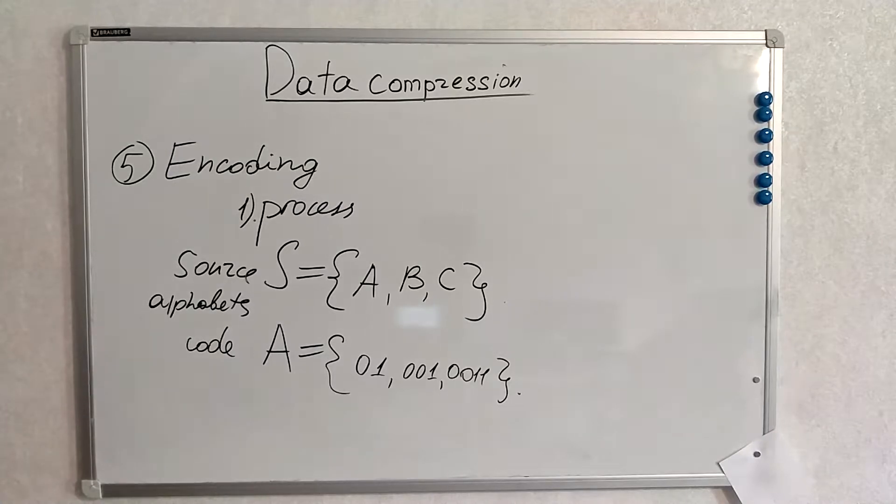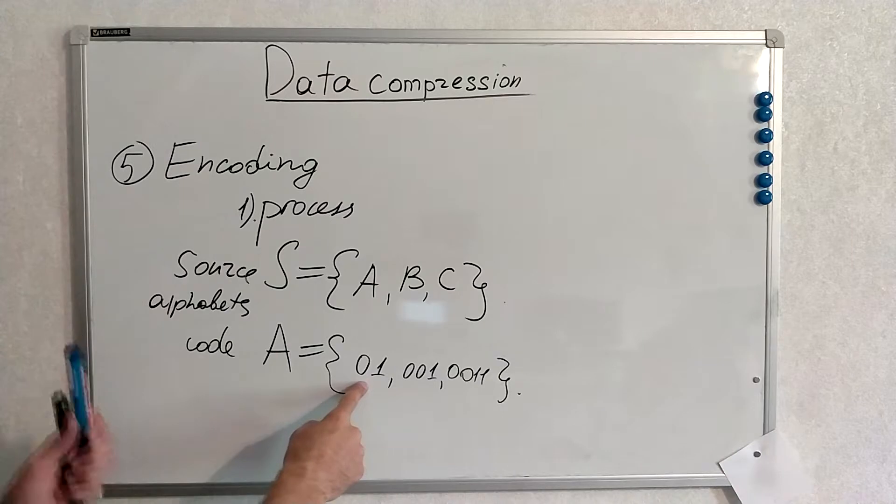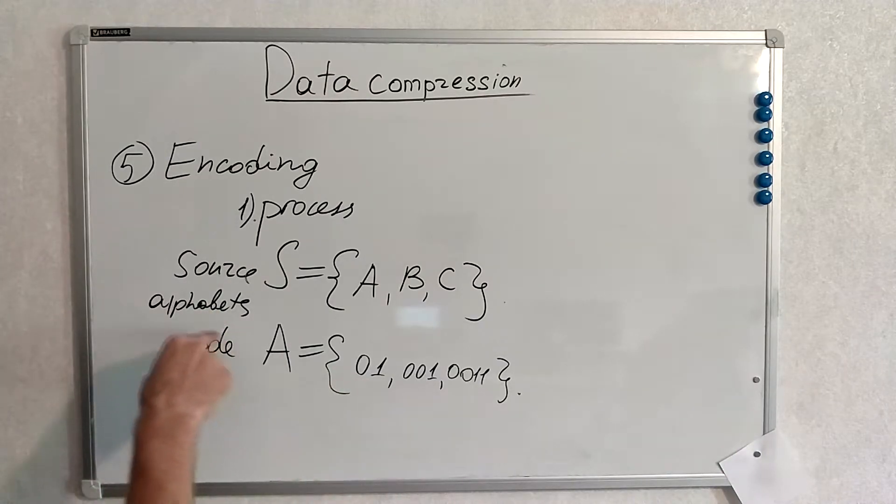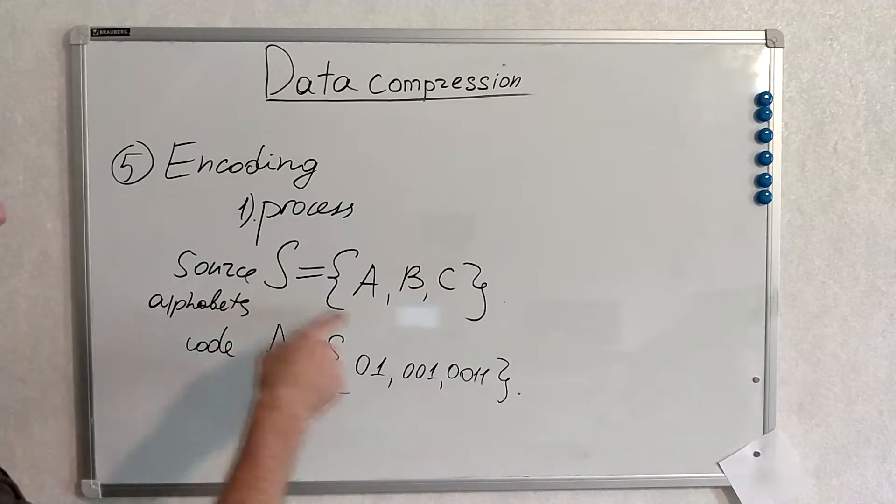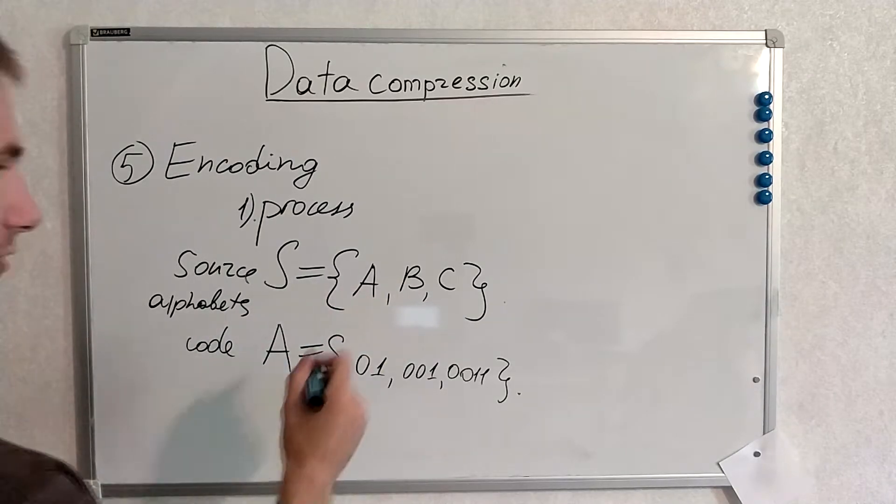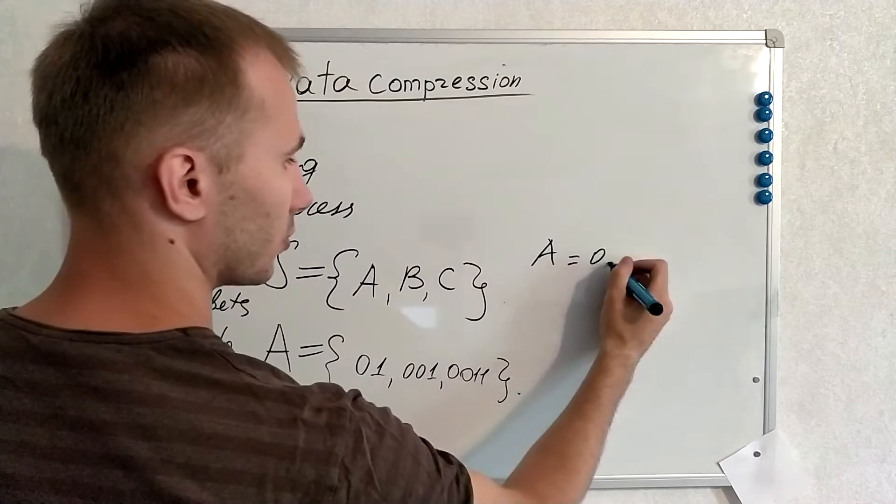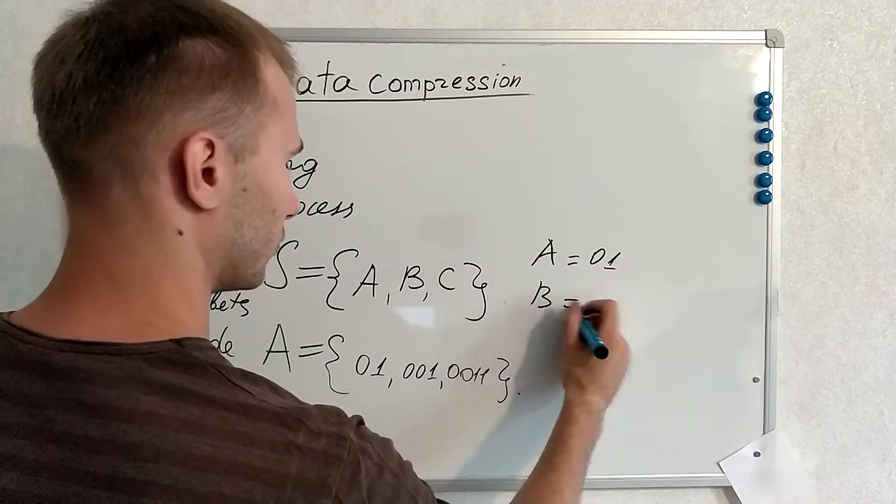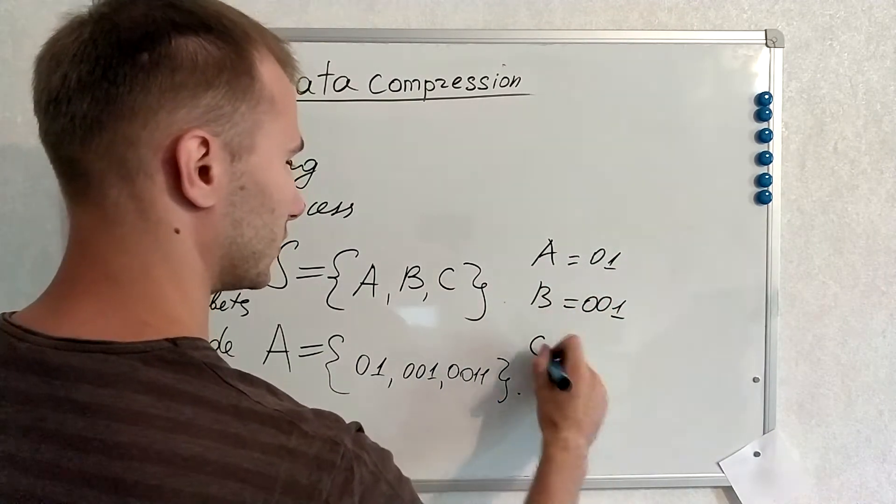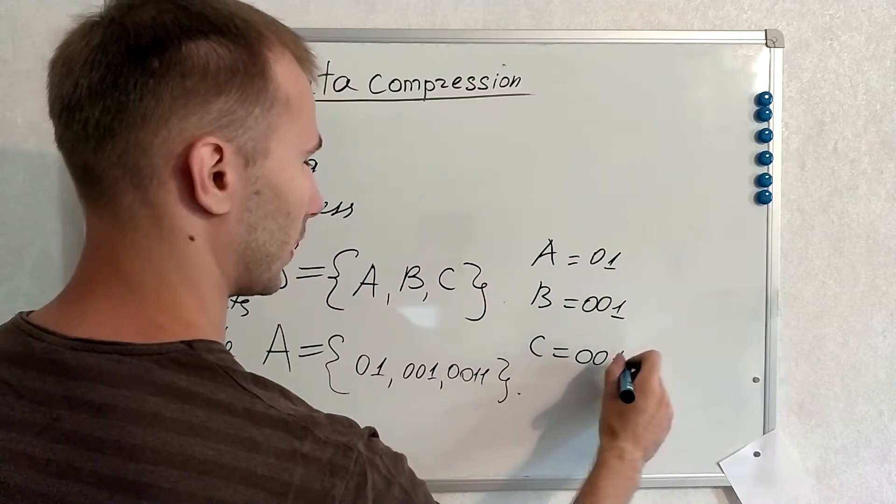And the encoding process will assign some values or some code words from code alphabets to source words from source alphabets. This will mean that A after encoding will be 0 1, B after encoding will be 0 0 1, and C after encoding will be 0 0 1 1.